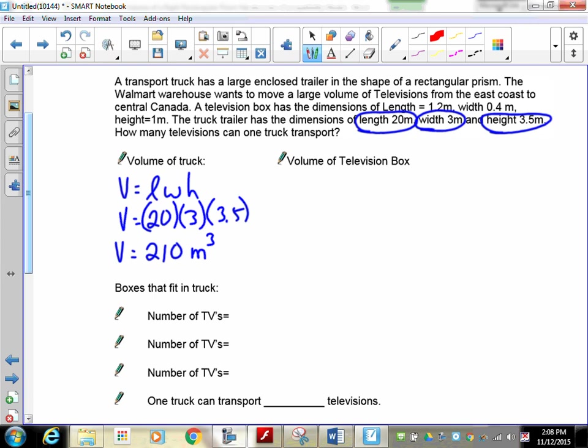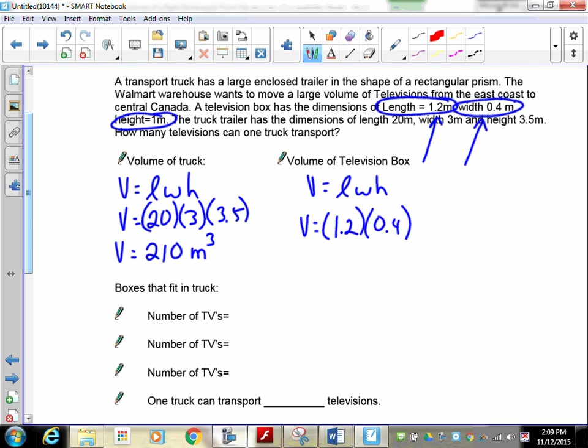Now I need to know the volume of one of the actual televisions. The length is 1.2, the width is 0.4, and the height is 1. Calculate the volume of one of the television blocks. Pause the recording and do that. Formula: length, width, height. Length is 1.2, width is 0.4, height is 1. Your volume, if you take on your calculator, 1.2 times 0.4 times 1 means that one of them is 0.48 cubic meters. So it's not quite half a cubic meter.